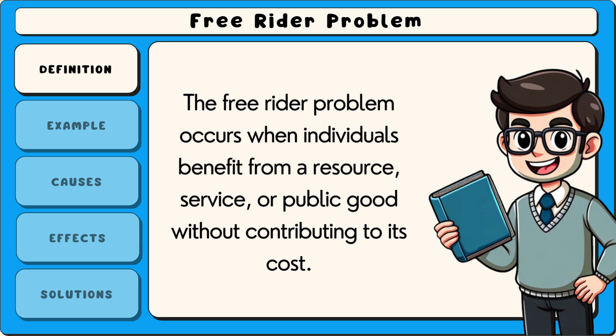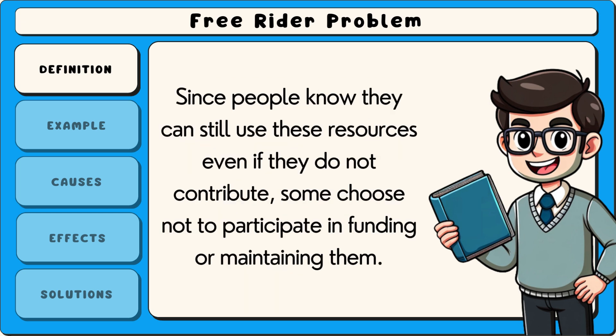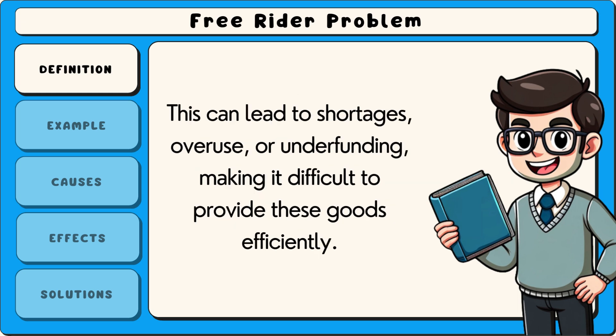The free rider problem occurs when individuals benefit from a resource, service or public good without contributing to its cost. This happens because public goods such as clean air, national defence or public parks are available to everyone regardless of whether they help pay for them. Since people know they can still use these resources even if they do not contribute, some choose not to participate in funding or maintaining them. This can lead to shortages, overuse or underfunding, making it difficult to provide these goods efficiently.